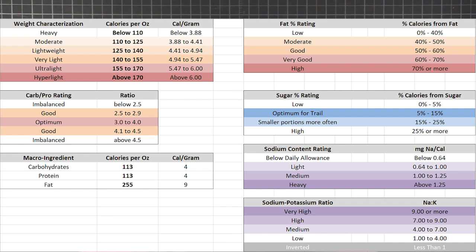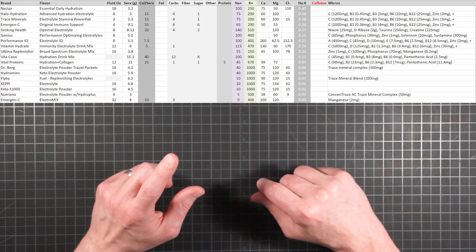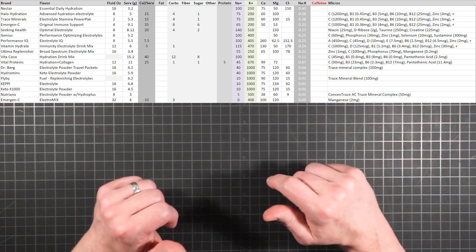One last point I wanted to illustrate regarding NAC values when using the calculator: note this category for what I call the inverted ratios. These are the supplements that actually have more potassium than sodium instead of the other way around. So just for fun, let's see what happens when you decide to supplement with an inverted ratio on a hot day.